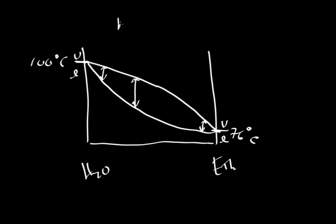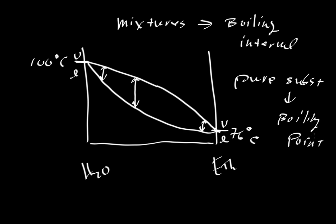The key thing here is that mixtures, things that are mixtures of two or more things, are going to have a boiling, or as we'll see later also a melting interval, while pure substances are going to have a boiling point, a very sharp boiling point. So water, a boiling point. Ethanol, a boiling point. But a mixture of, let's say something that is here, a boiling interval.